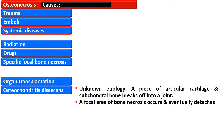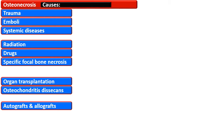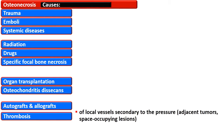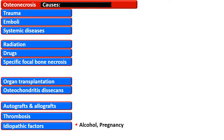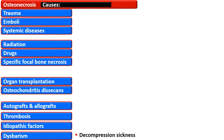Another term is osteochondritis dissecans — a disease of unknown etiology in which a piece of articular cartilage and subchondral bone detaches and breaks off into the joint as a result of a focal area of bone necrosis. Autograft and allograft are also associated with this disease, as is thrombosis of local blood vessels secondary to pressure from an adjacent tumor or other space-occupying lesion. Idiopathic causes include alcohol intake and pregnancy. Dysbarism or decompression sickness is also another cause of osteonecrosis.